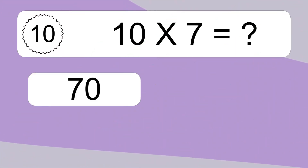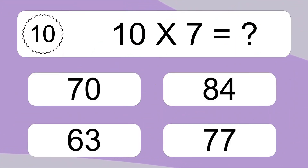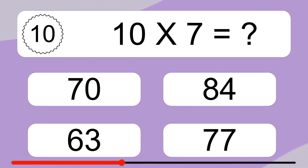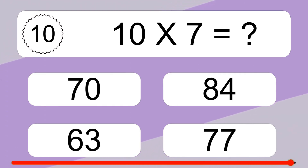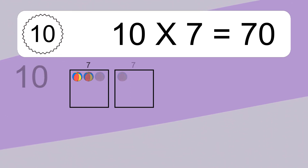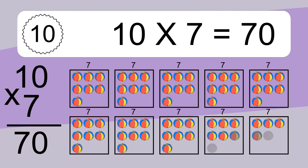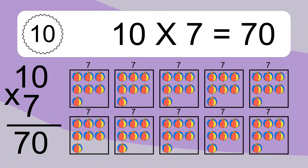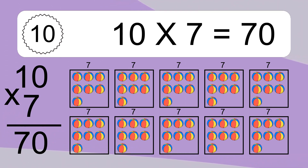10 times 7 equals what? 10 times 7 equals 70. We have 10 boxes, and each box has 7 colorful balls inside. If you count all the balls in all the boxes together, you will have 10 times 7 balls. This equals 70 balls.